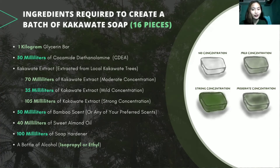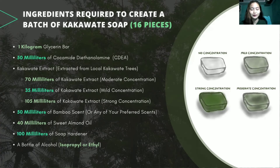Next is the star ingredient of the soap, which is the Cacawate leaf extract concentration. For this one, we have three different concentrations. Next is the scent, and the one we use is a bamboo scent, which is a natural scent that is very calming and relaxing.